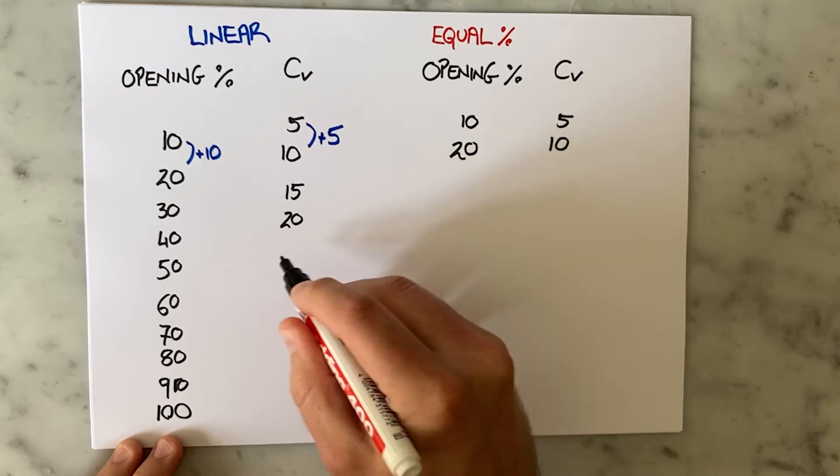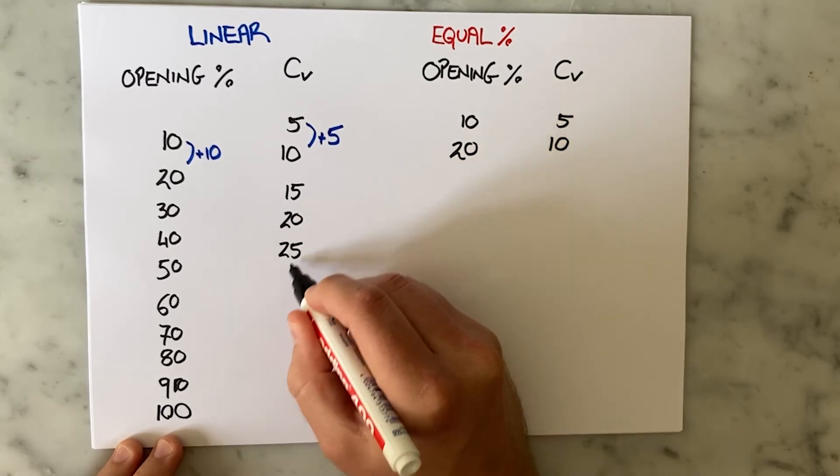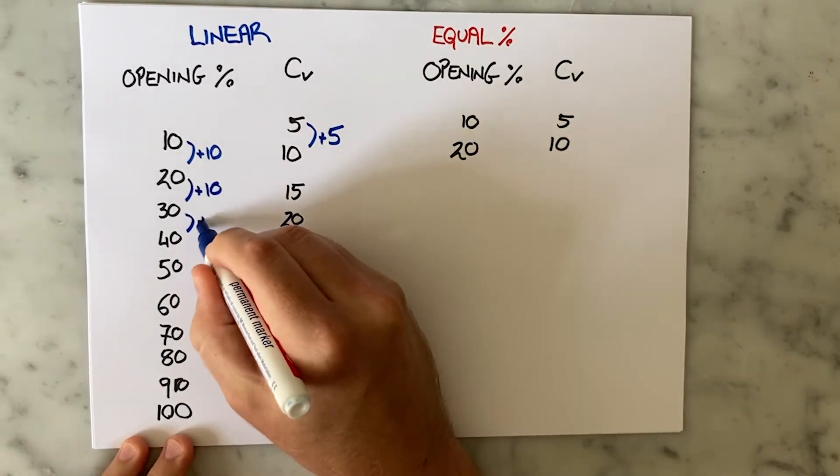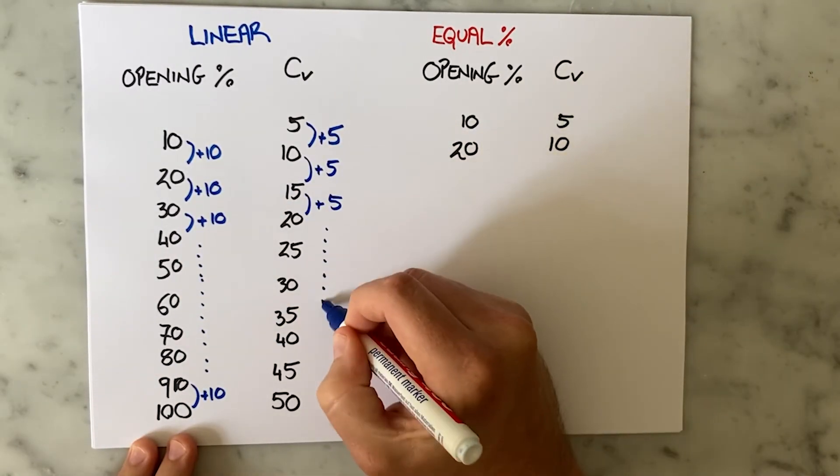At 40% opening it goes up another 5 to 20. I carry on like this until the valve is 100% open and I see that this valve has a CV of 50.